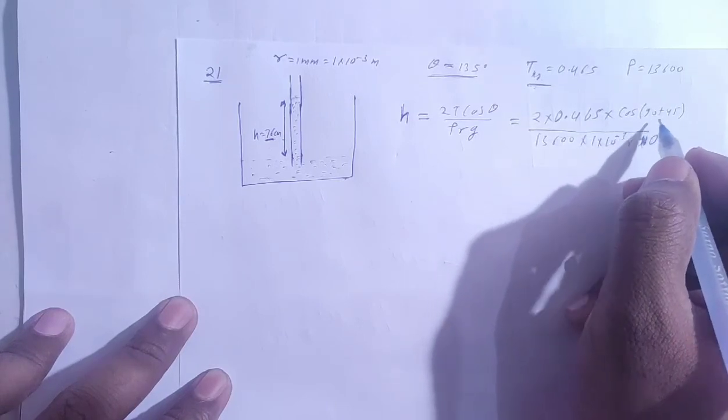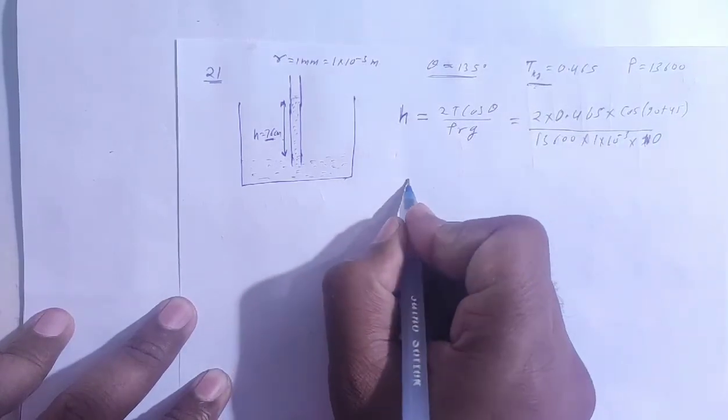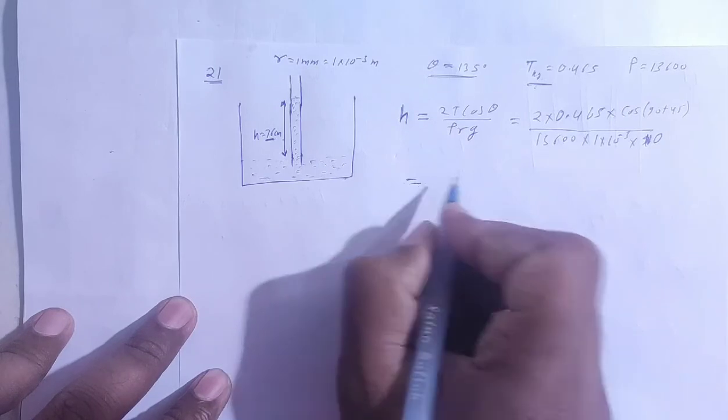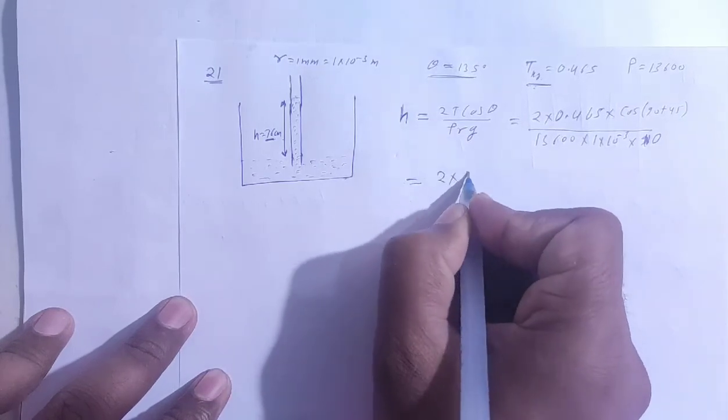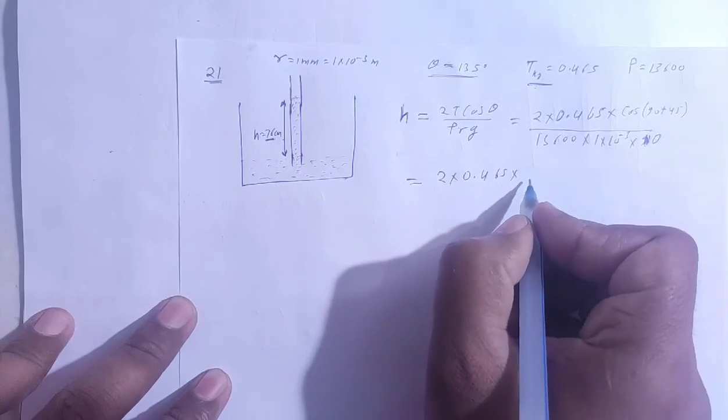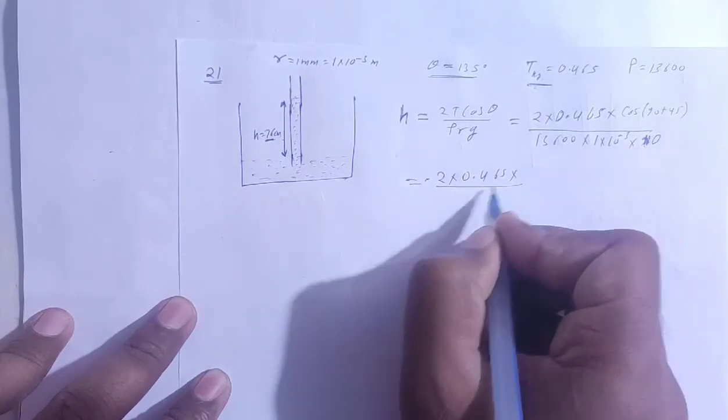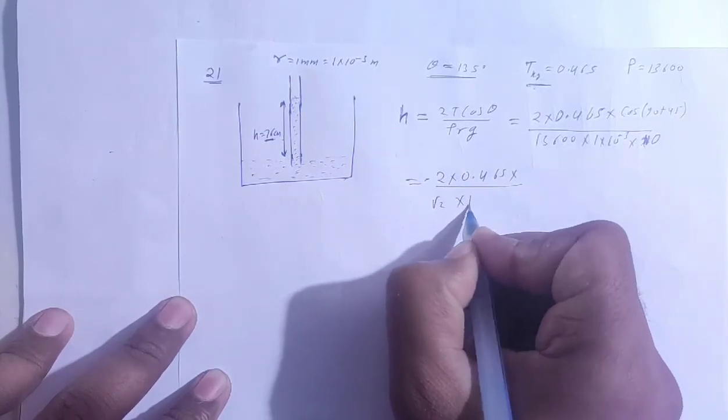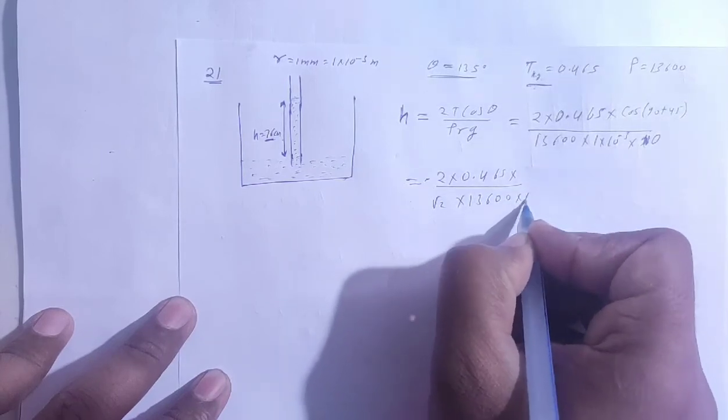Cos 45, which is minus sin 45. So this is minus sin 45, divided by 1 into 0.465. So this is minus sin 45, it will be equal to minus 2 into 0.465 into 1 over root 2.